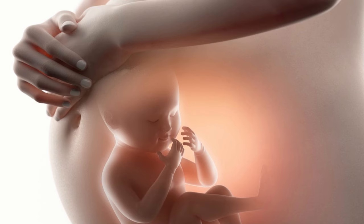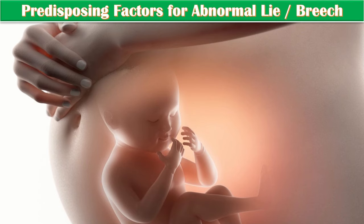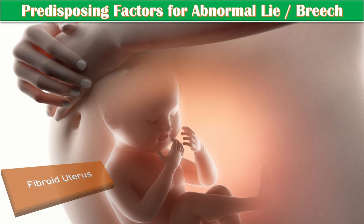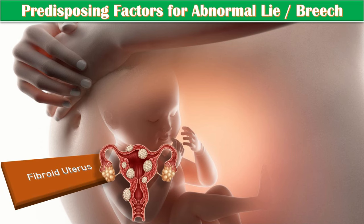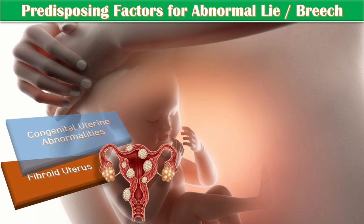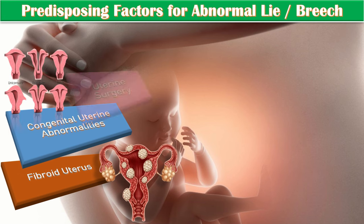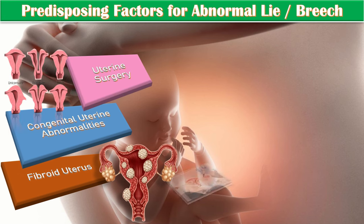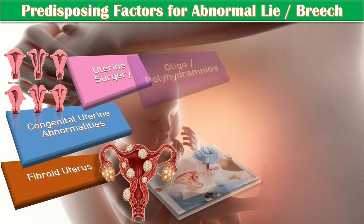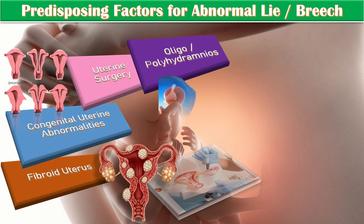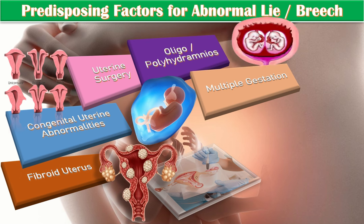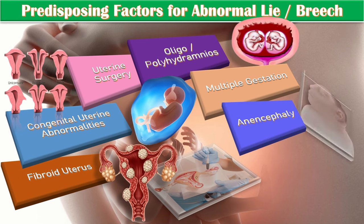The predisposing factors for abnormal lie or breech presentation include a fibroid uterus, congenital abnormalities of the uterus, uterine surgery, oligo or polyhydramnios, multiple gestation, and fetal abnormalities such as anencephaly and hydrocephalus.